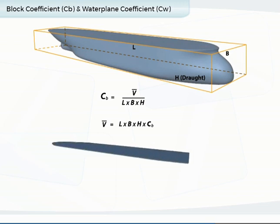Similarly, the waterplane coefficient, CW, is the ratio of the waterplane area and the area of a rectangle that has the same extreme dimensions.